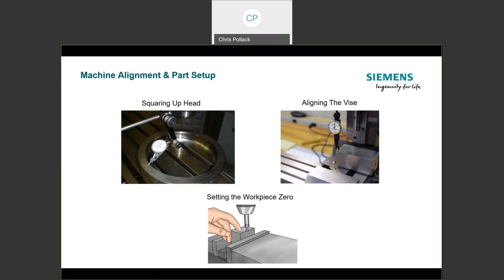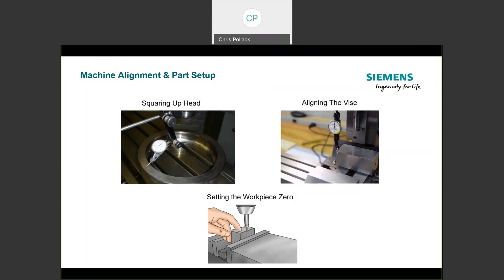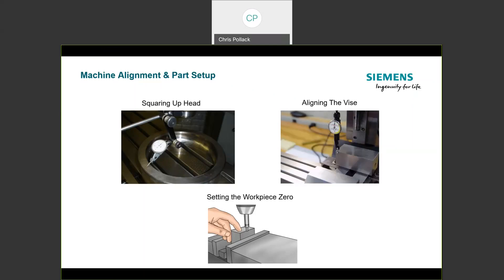Once you've defined the datum surface, you can square up your vice — just like bolting a Kurt vice to the table and running an indicator back and forth. More importantly, you clock the coordinate system of X, Y, Z. Only after those two steps can you set your part zero. Just like on a Bridgeport — you'd never edge-find your part and then go tram your head, because your part location is no longer valid. Same process here.